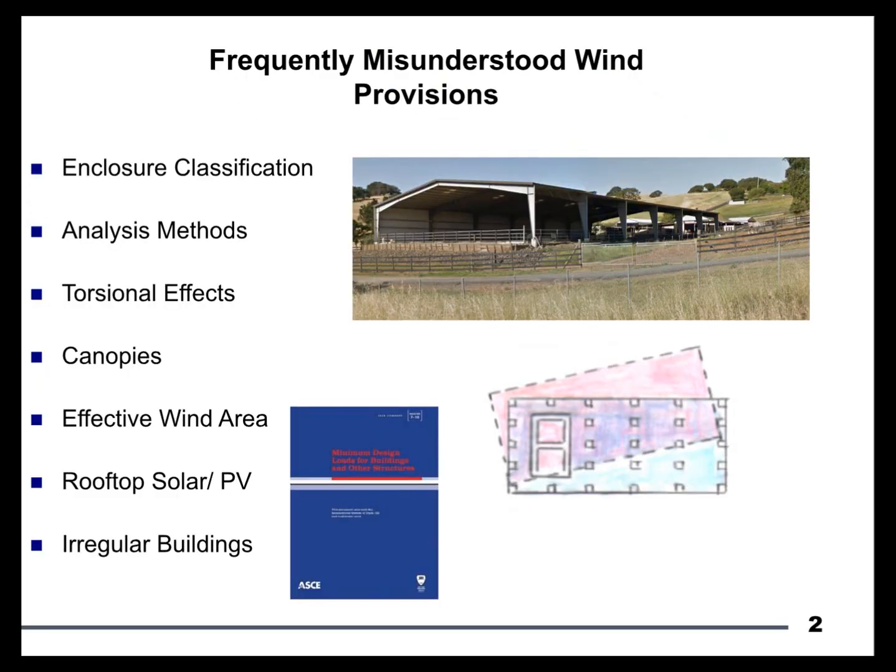We're going to hit on a handful of topics and we will split it into approximately thirds. In our first third we will be talking primarily about enclosure classification and analysis methods — the former being how we classify our buildings, whether they're open, closed, or partially enclosed. The second part on analysis methods will focus on what ways we can generate our wind loads when following ASCE 7. There are a lot of opportunities available to us. We'll take a quick break and come back for Q&A, so feel free to type in questions as we go.